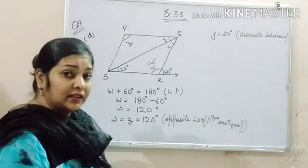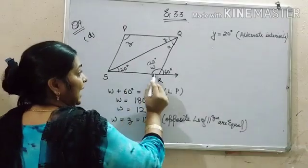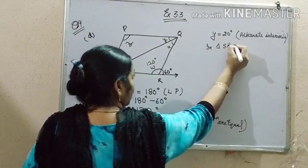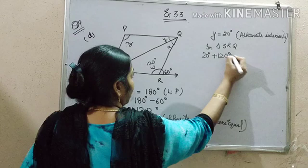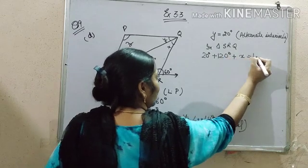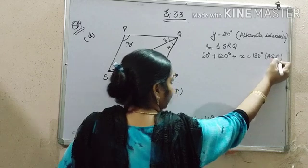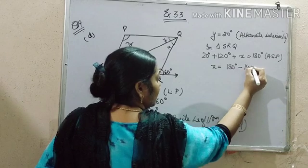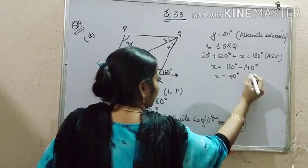There are two methods to find the value of x. One is you can use angle sum property in this triangle. In triangle SRQ, 20 degree plus 120 degree plus x is equal to 180 degree by angle sum property. So x will be equal to 40 degree.